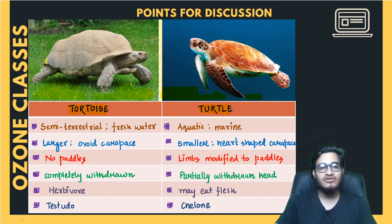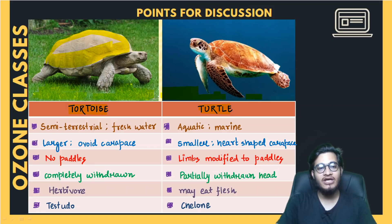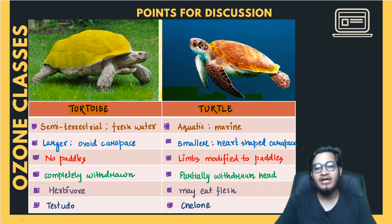Now talking about their carapace — the cover they have is called a shell or carapace. The shape of the carapace in case of the tortoise is oval. But if you look at the turtle from the top, the carapace is heart-shaped. So that is also a major difference between the two.